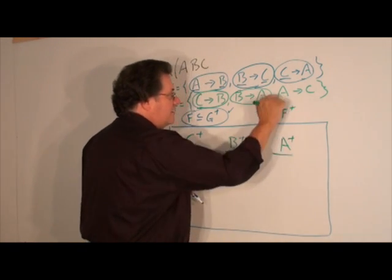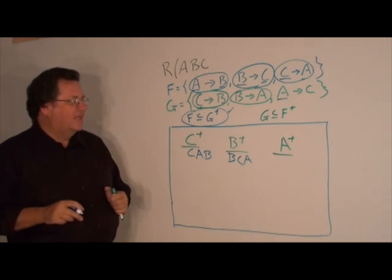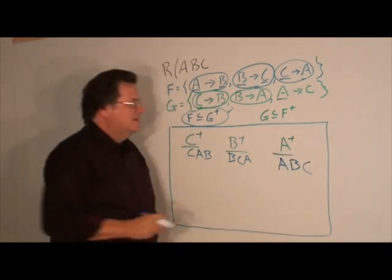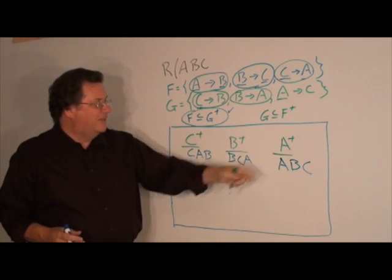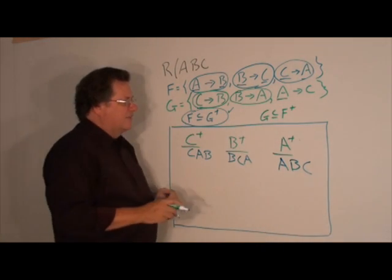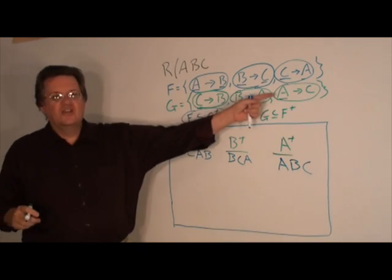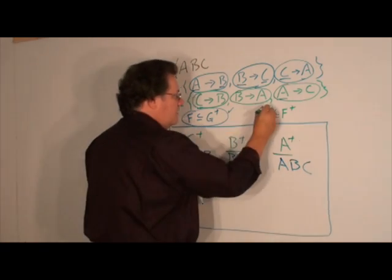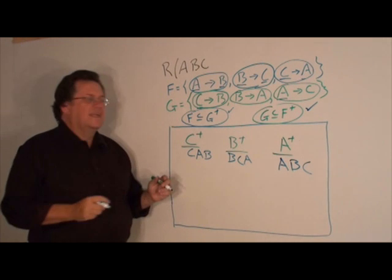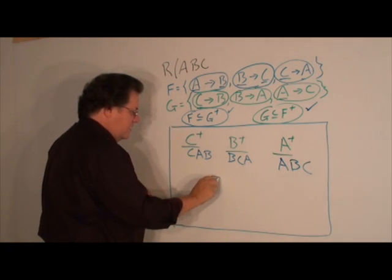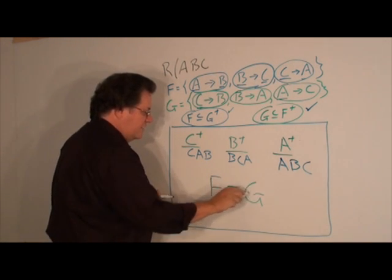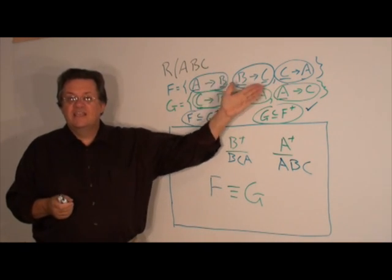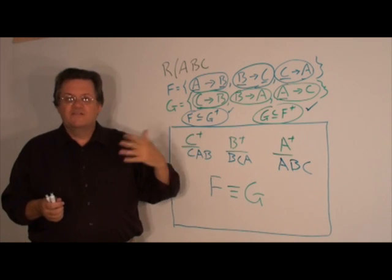Finally, we compute A closure with respect to F. It includes A, then A→B, and B→C. So A closure with respect to F is A, B, C. This contains the right-hand side C, therefore A→C is in F closure. We've now shown that F covers G — the second part is demonstrated. This clearly shows that F is equivalent to G, because F covers G and G covers F. And as you can see, they have no functional dependencies in common, so equivalency depends on whether F covers G and G covers F.